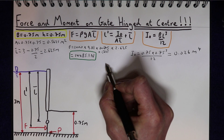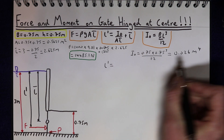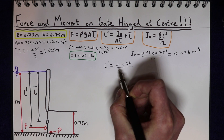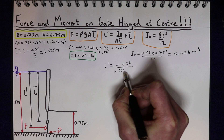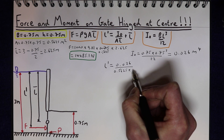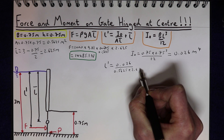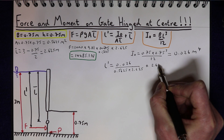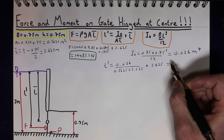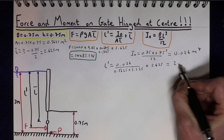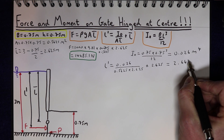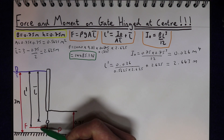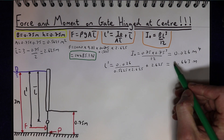We can now work out the location of the force as the second moment of area divided by the area of the gate, 0.5625, times the centroid 2.625, added to the centroid. That gives us a point of action of 2.643 metres from the water surface.